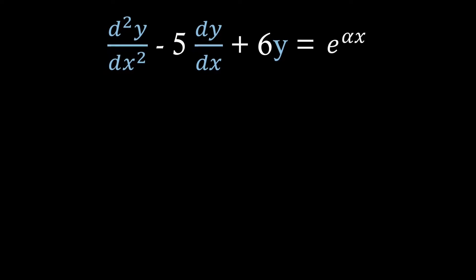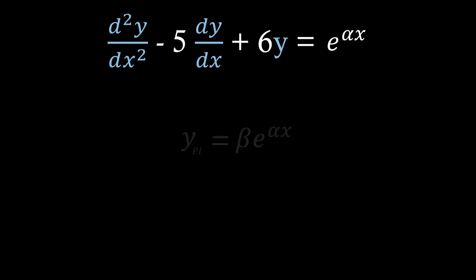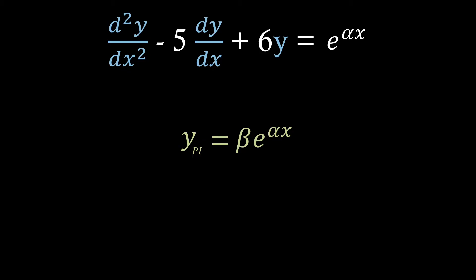Now for the final form we might want to try. So say on the right hand side we have an exponential e to the alpha x. Then what we're going to try is a constant multiplied by e to the alpha x again, just because when you differentiate e to the alpha x, all you're going to get is alpha e to the alpha x.